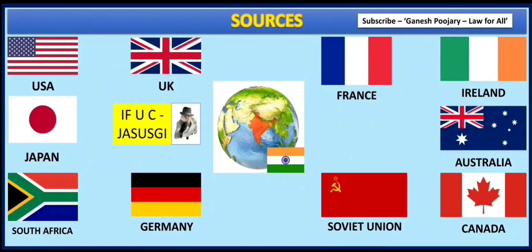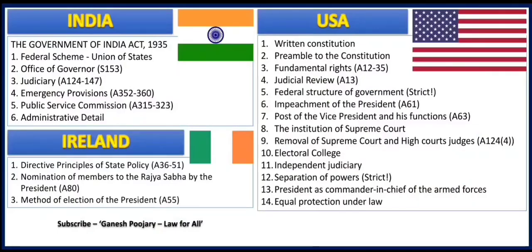From the next slide, let's quickly go through what we got from all of these Constitutions one by one. As I said, India also had a source for the Indian Constitution in the form of the Government of India Act 1935. We took the federal scheme from this Act, which gives the concept of Union of States, the Office of Governor, Judiciary, Emergency Provisions, Public Service Commission, and Administrative Detail.